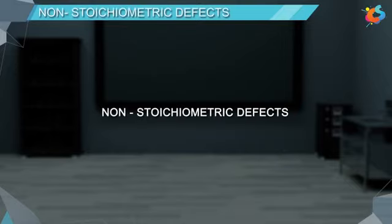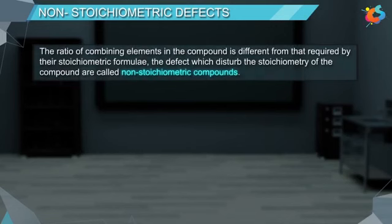Non-stoichiometric defects: the ratio of combining elements in the compound is different from that required by the stoichiometric formulae. The defects which disturb the stoichiometry of the compound are called non-stoichiometric compounds.